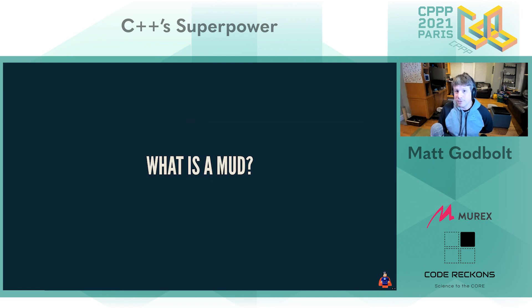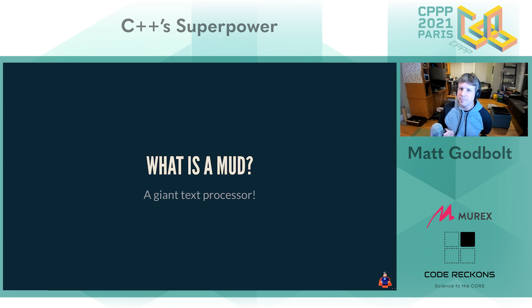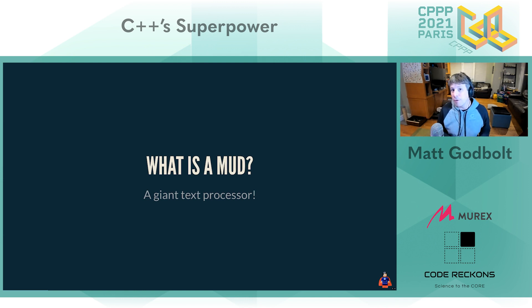This is the piece of code we're going to be working on today — taking that code from '96 and bringing it forward to the wonderful things we have available now. A MUD is really a giant text processor: it loads text from files that describe monsters, rooms, and items; it takes user input which is text; and it generates text back. Text processing in C — probably not the first choice of language. The machines we could run these on were shared 200MHz Solaris machines among about 100 other students, so some code was very carefully handcrafted to be fast and super efficient.